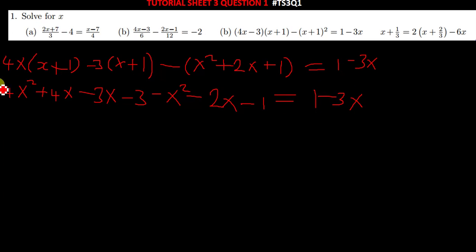Here now, you just pair the like terms. So you have 4x squared minus x squared, this will give you 3x squared. Then 4x minus 3x will give you x, minus 2x will give you negative x. Then negative 3 minus 1 give you negative 4, being equal to 1 minus 3x. So you take this 1 minus 3x to the other side of the equal sign.